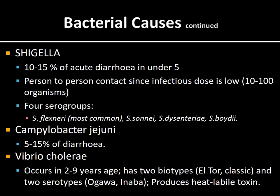Other important pathogens include Shigella (10 to 15% of acute diarrhea in under-5s), Campylobacter jejuni (5 to 15% of diarrhea), and Vibrio cholerae. Vibrio cholerae can cause epidemics and produces large-volume, frothy stools that can cause severe dehydration quickly — fatal if not treated immediately.